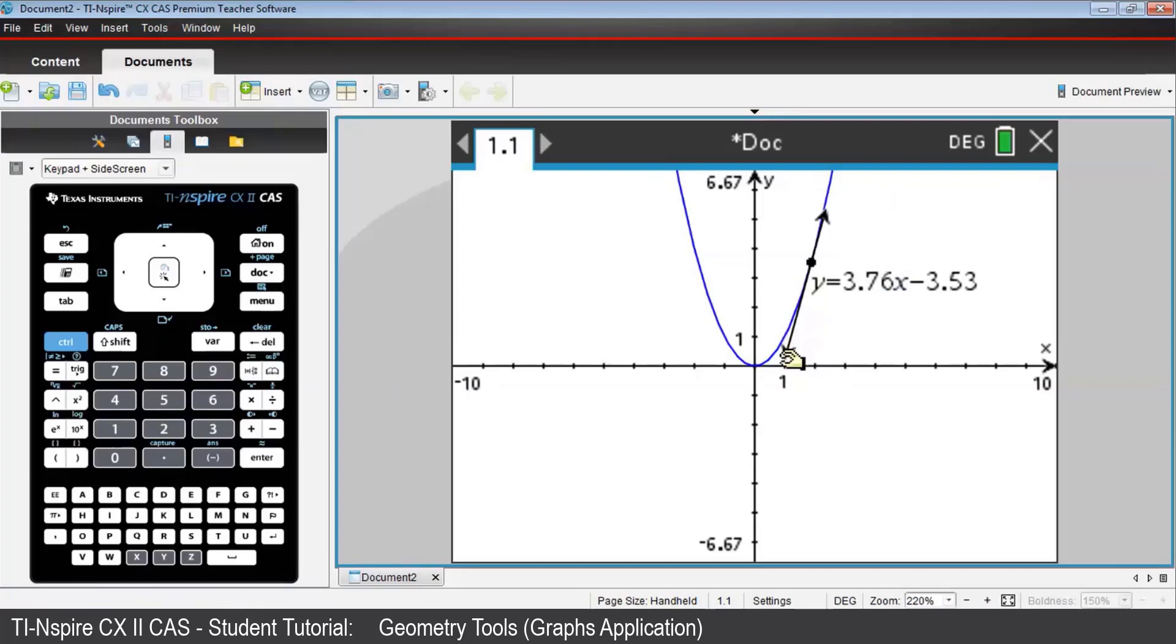Now press and hold down the clickpad, and the hand will close. You have now grabbed the end of the line. Use the touchpad to pull the end of the line in the direction you want, here to apparently lengthen it, and then release your grip on the line by pressing Escape. The hand will open. Do the same for the other arrow end of the line. Be sure to release your grip using Escape.